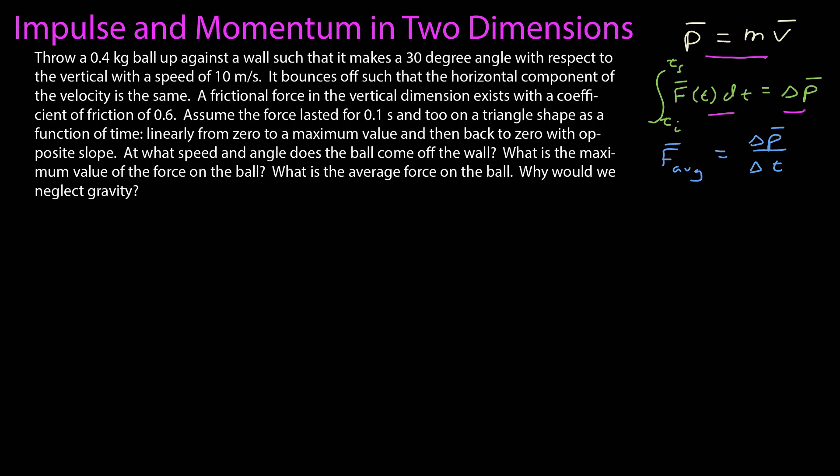So we're going to do this example. I'm not going to read the whole thing right off. You can pause and read it if you'd like, but I'll go through this setup now. We start with some ball that we're throwing up against a wall. We throw it with an angle theta relative to the vertical, which is 30 degrees, and it comes off at some different angle. We're told that the horizontal component is exactly what it was before in the other dimension, but the vertical component has changed because of a frictional force during the time of contact. We're told that the force lasts a tenth of a second, and that it took on a particular shape as a function of time. We want to know the speed and the angle the ball comes off the wall, as well as the maximum value of the force and the average value of the force. We're neglecting gravity, but in the end we want to take a look at whether that was a good idea.